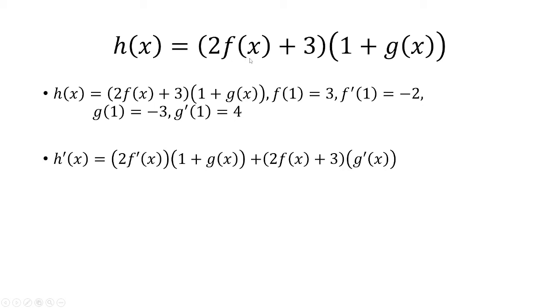The derivative of 2 times f of x is 2 times f prime of x. The derivative of 3 is 0, and we multiply that by 1 plus g of x.